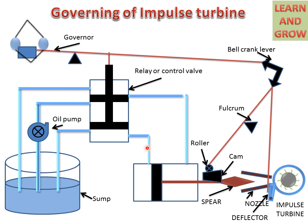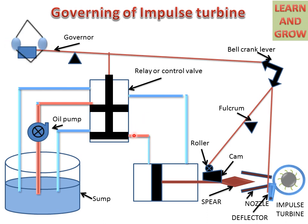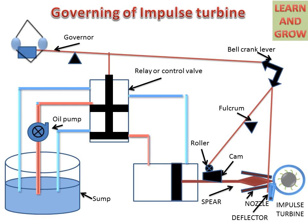Then the oil pump starts working and supplies oil to the cylinder. By the sleeve action, the piston moves in the downward direction and supplies oil from the valve to the spear cylinder. This cylinder moves in the forward direction, decreasing the area, so the flow rate is decreased. The compressed fluid goes back to the oil sump.